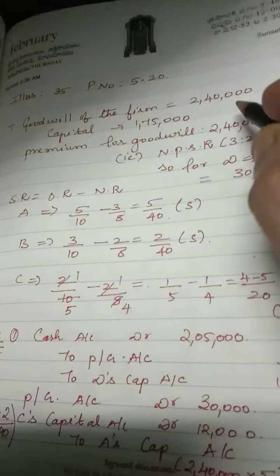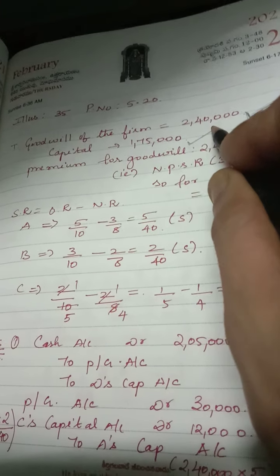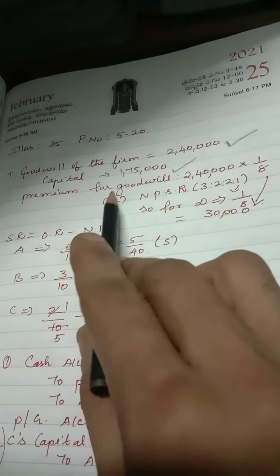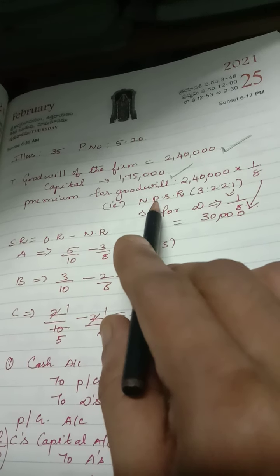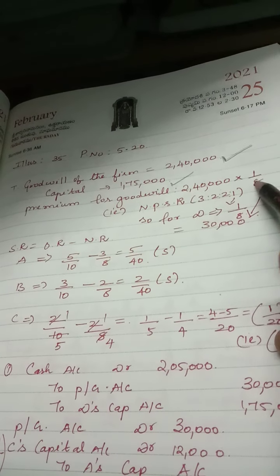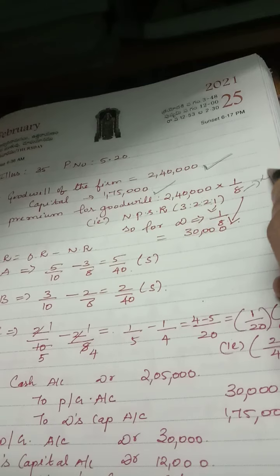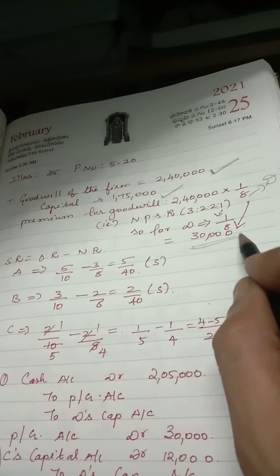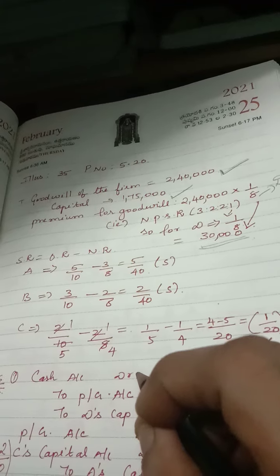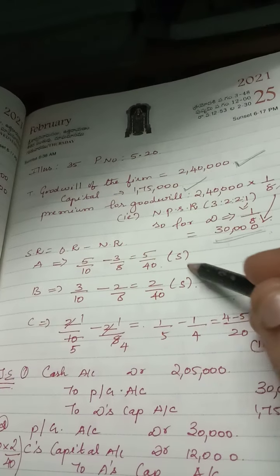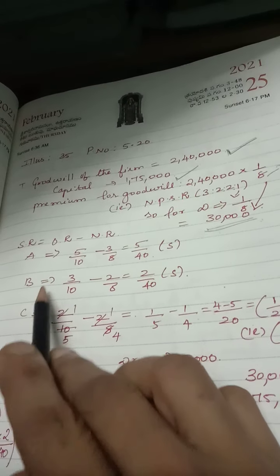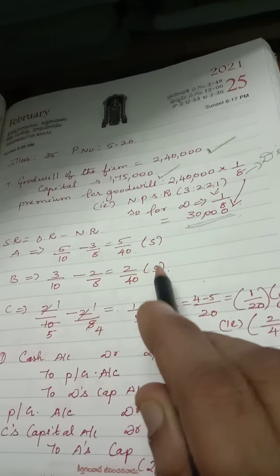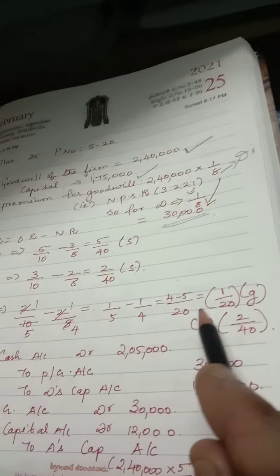The total goodwill is 2,40,000 and D's capital brought is 1,75,000. From the total goodwill we can find D's premium for goodwill: 2,40,000 into D's share of 1/8 equals 30,000. Next we find the sacrificing ratio for A, B and C. By calculation, A and B are the sacrificing partners and C is the gainer partner.